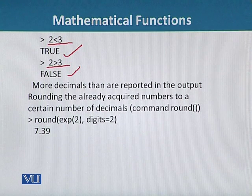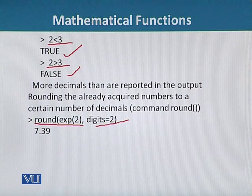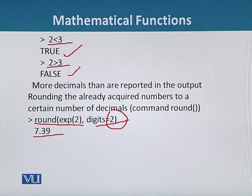For example, we can write the command round(exp(2), digits=2). It means that we will get two digits after the decimal. So for exponential 2, we will get the answer 7.39. If we do not write digits=2, then we will get more digits after the decimal.